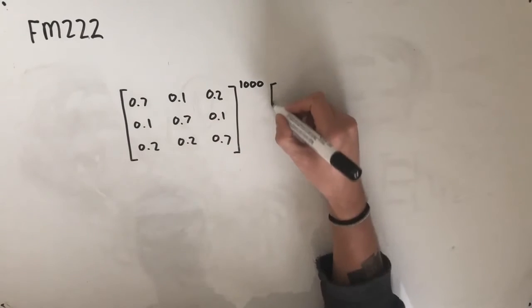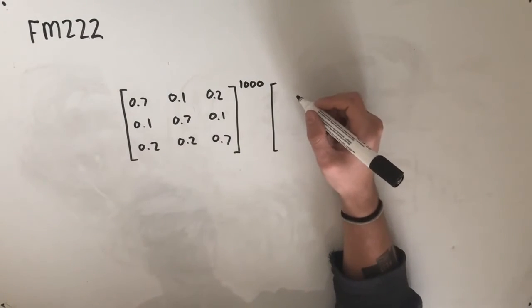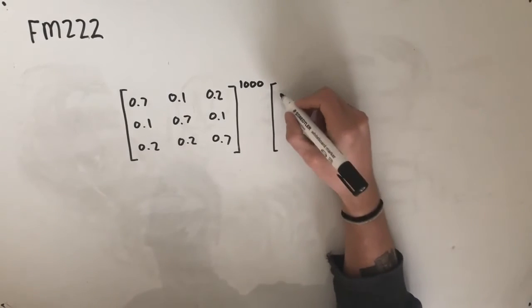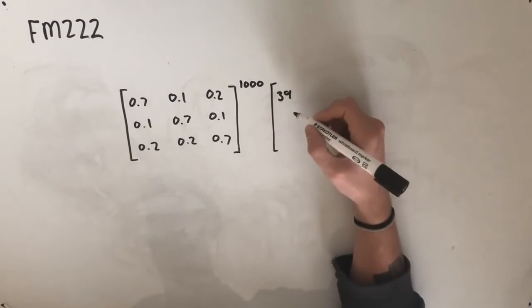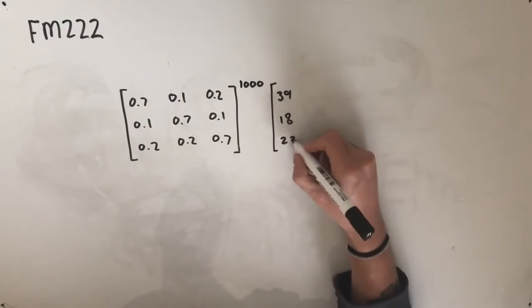And then we're going to multiply that by a state matrix. So we're told that 39 choose an English breakfast on this day, 18 choose omelettes, and 23 choose pancakes.